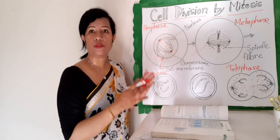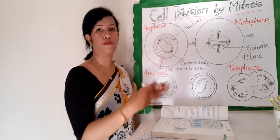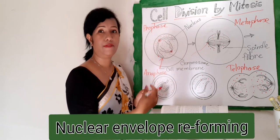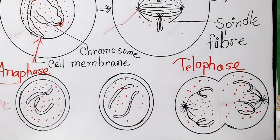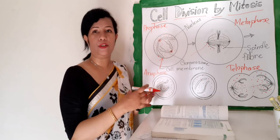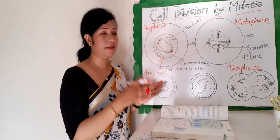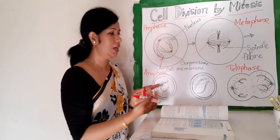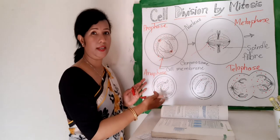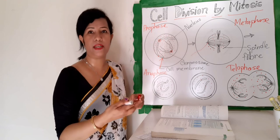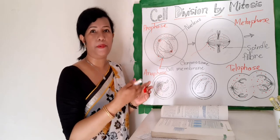Next is telophase. In telophase, the nuclear envelope reforms — that is the key difference between metaphase and telophase. The chromatids have reached the poles of the spindle, they uncoil again, and the nucleolus begins reforming.